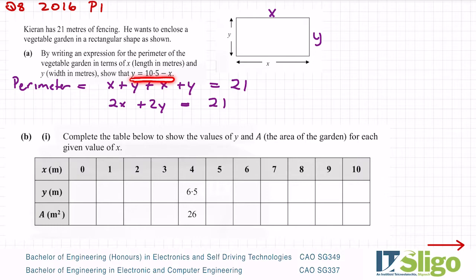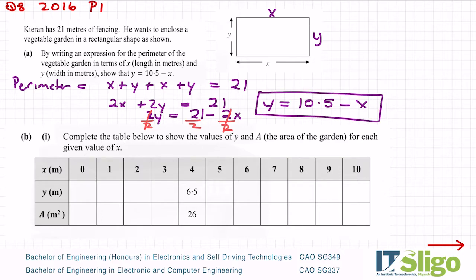Okay, let's tidy it up: x and x is 2x, y and y is 2y, and that's equal to 21. Now I'm looking up here, I can see the y's on their own on the left and everything else on the right, so let's bring over the 2x so that you get 2y equal to 21 minus 2x. Let's have a look up here, it's not 2y, it's a single y, so let's divide across by 2. You cancel, you cancel, and we'll end up with y being equal to 21 over 2, which is 10.5, minus x. So that is the perimeter of the garden in terms of x.